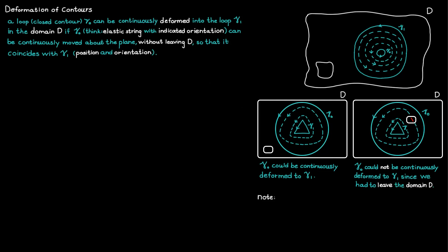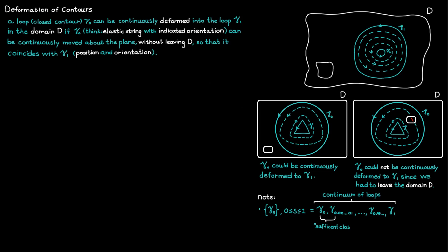The key takeaway so far is that when you want to deform one loop into another, you first need to create a set containing an infinite amount of loops from gamma zero to gamma one, where each pair of consecutive loops is sufficiently close to each other. And second, you can deform all you like, as long as you never leave the domain D.